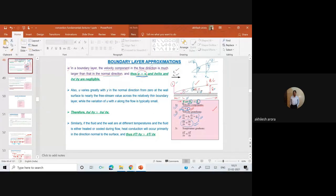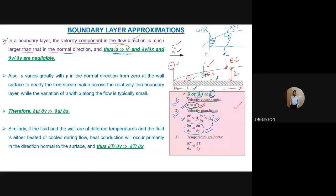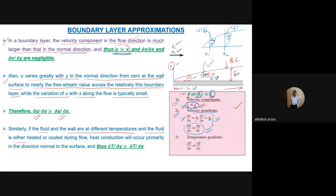u varies greatly in the y-direction, from 0 at the wall surface to nearly the free-stream value across the thin boundary layer, while variation of u along x is very small. So del u/del y >> del u/del x. Similarly for the thermal boundary layer: if the fluid and wall are at different temperatures, heat conduction occurs primarily normal to the surface, so del T/del y >> del T/del x. This is the third boundary layer approximation.